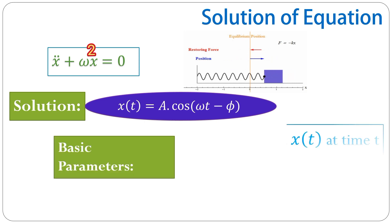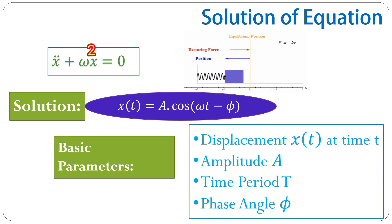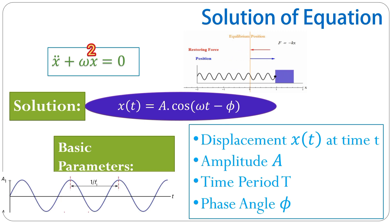So looking more closely into it, we find some basic parameters. One parameter is x of t, the displacement at time t, that is exactly what you see here. This is what the displacement looks like, and it means that in this direction we are talking about the coordinate x, and in this direction we are talking about the time t. So x of t is A times cosine omega times t minus the phase angle phi.